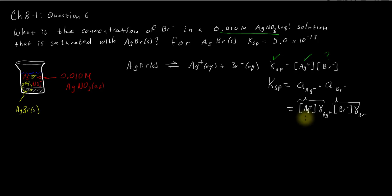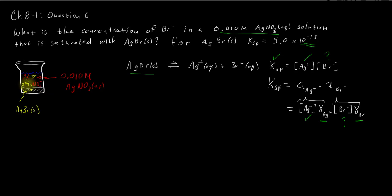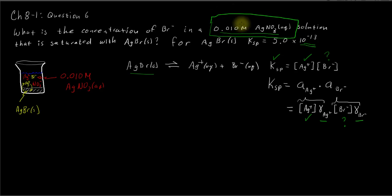We still know the concentration of silver and the Ksp value, so we're still solving for bromide. But to find the activity coefficients, we need to know the ionic strength of the solution. What ions are in solution? We've got silver and nitrate from the silver nitrate, and also silver and bromide from the dissolved silver bromide. However, the Ksp is 5.0 times 10 to the negative 13, meaning very little silver bromide dissolves — not enough to appreciably change the ionic strength. So the ionic strength really comes from the dissolved silver nitrate ions.